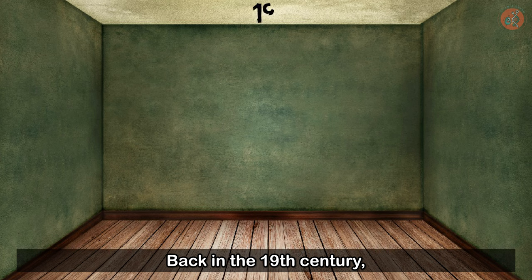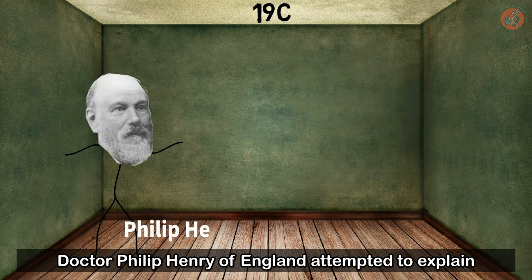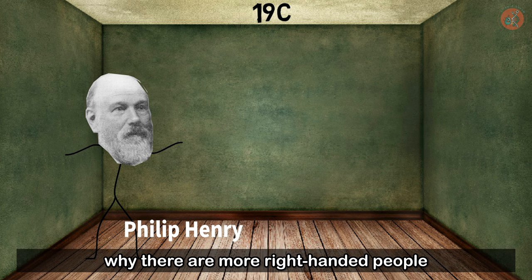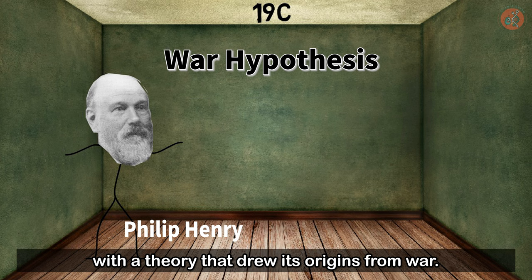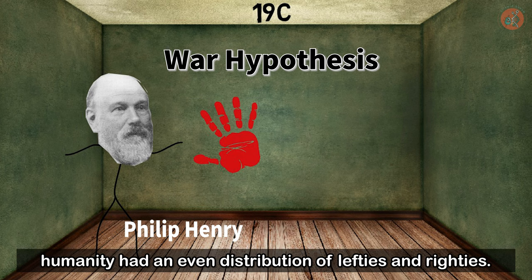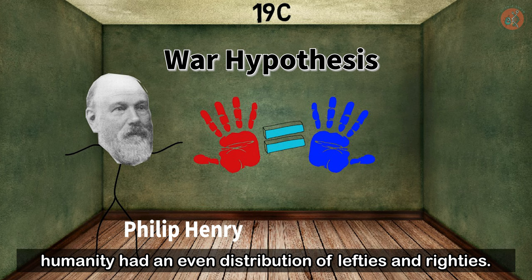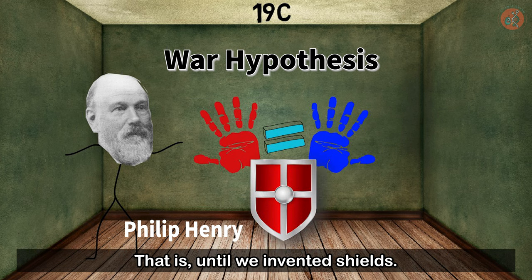Back in the 19th century, Dr. Philip Henry of England attempted to explain why there are more right-handed people with a theory that drew its origins from war. He said that in the beginning, humanity had an even distribution of lefties and righties. That is, until we invented shields.